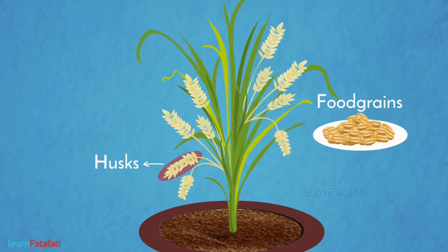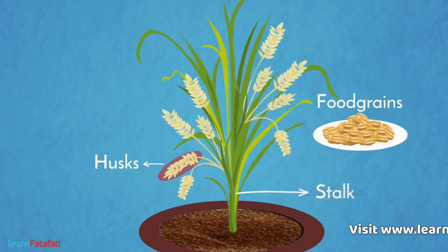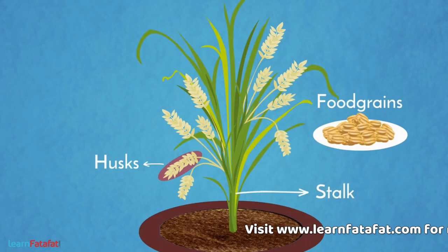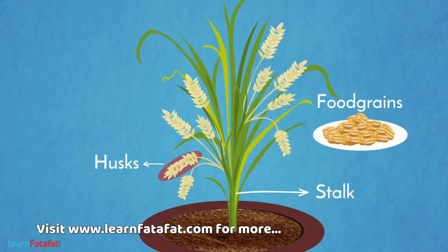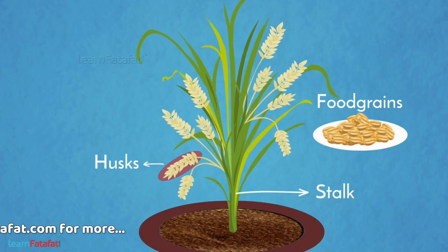These are attached to the stalk of the plant. Plucking each food grain from the plant body needs a lot of effort. It is simply impossible to pluck all food grains from all plants.